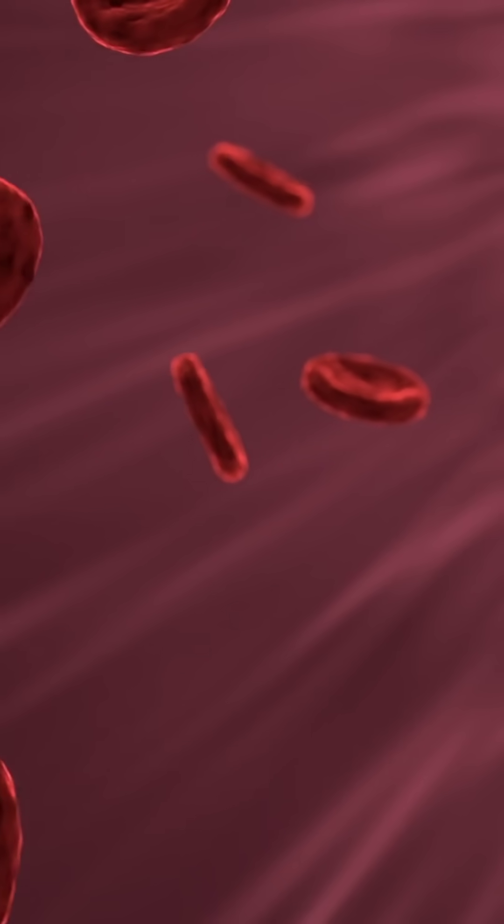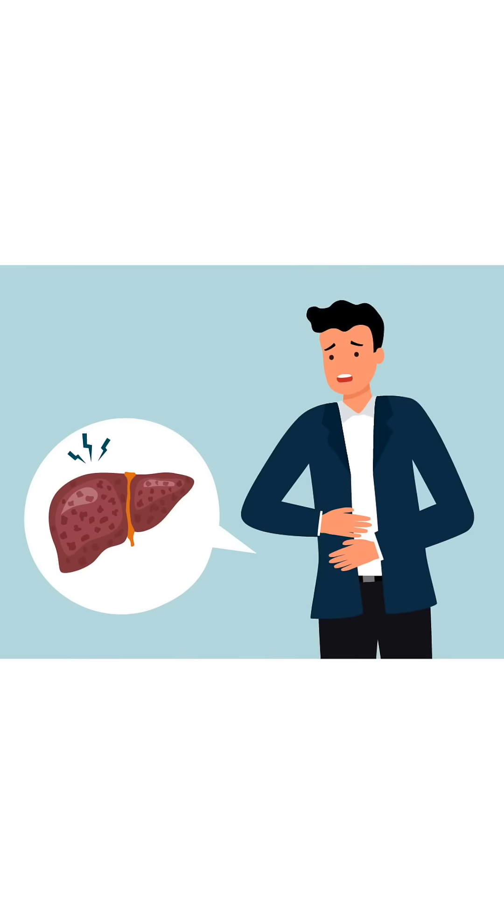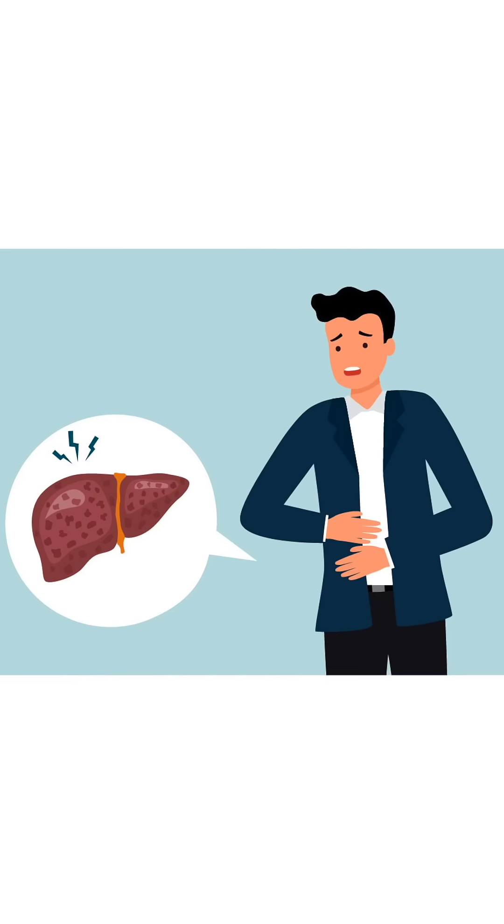Bilirubin is produced inside our body when red blood cells are broken down — hemoglobin is released, and that gives us bilirubin. This bilirubin is then processed in the liver.